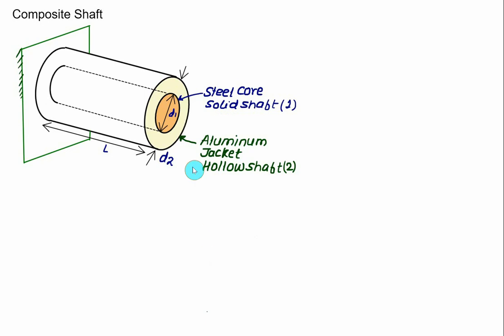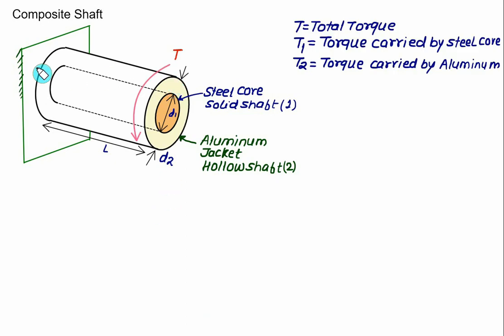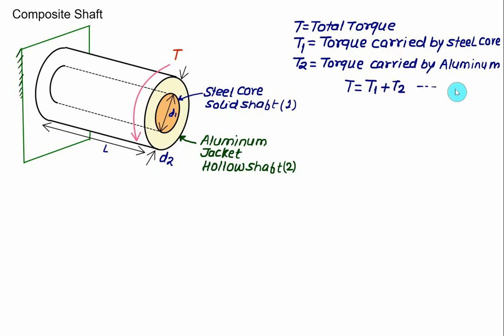In this problem, the inside core of diameter d1 is a steel solid shaft (labeled shaft 1) and the outside is an aluminium hollow jacket (labeled shaft 2). This arrangement is fixed at one end and at the other free end we apply total torque t. Similar to axial loading, t1 is the torque carried by the steel core and t2 is the torque carried by the aluminium jacket, giving us equation one: t1 + t2 = t, from summation of torques equal to zero.